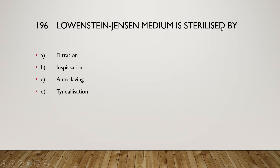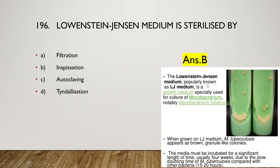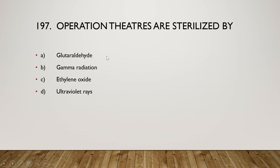Next question: Lowenstein-Jensen medium is sterilized by filtration, inspissation, autoclaving, or tyndallization? The right answer is option B, inspissation. The Lowenstein-Jensen medium, popularly known as LJ medium, is a growth medium specially used for culture of mycobacteria, notably Mycobacterium tuberculosis. When grown on LJ medium, M. tuberculosis appears as brown, granular, rough colonies.